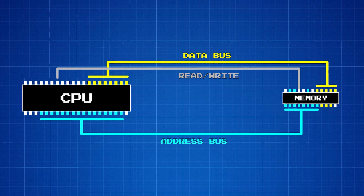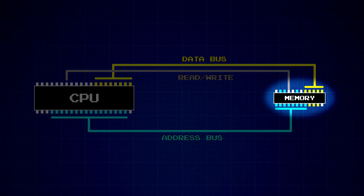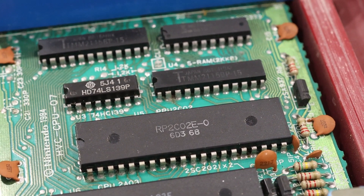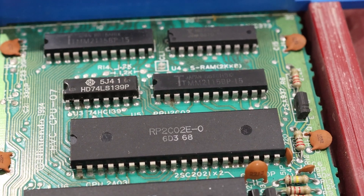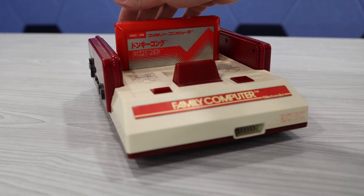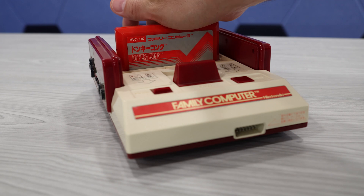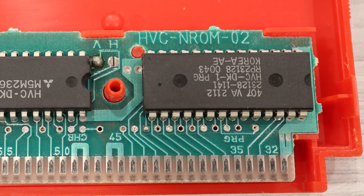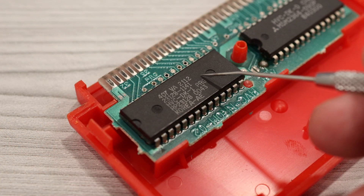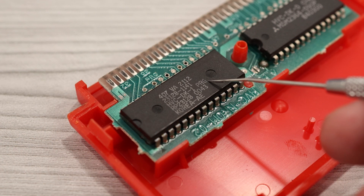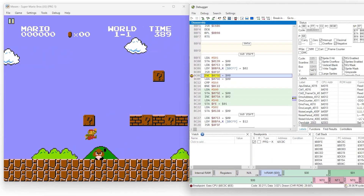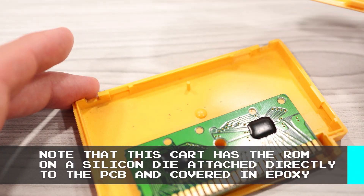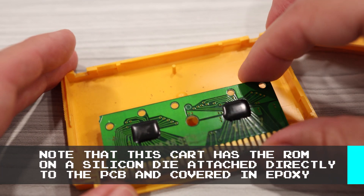The example we've been using isn't quite realistic because there's only one chip on the bus. In reality, there are multiple chips, and the CPU could be talking to any one of them at any given time. In fact, every time you insert a game cartridge into the Famicom, you're adding another chip onto the CPU's data and address buses. This chip is called the Program ROM, and it holds the game's code. So in Episode 2, when we were looking at the code snippet from Super Mario Bros., the CPU would have been reading those instructions from the Program ROM on the Super Mario Bros. cartridge.